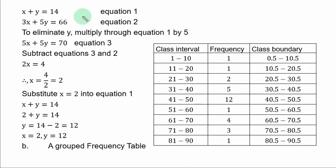You have equation 1 and equation 2. I want to eliminate y first. To do that, this y needs to be 5. So you multiply through equation 1 by 5. And you have 5x plus 5y equal to 70. Let's call that equation 3. To eliminate y, you subtract equation 3 and 2 side by side. You have 5x minus 3x. You have 2x. 5y minus 5y is 0.